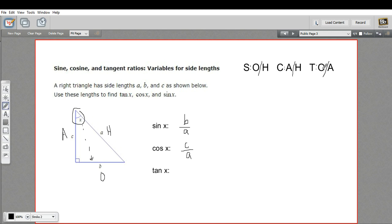Finally, the tangent is opposite over adjacent. The opposite is b and the adjacent is c, so tangent x equals b over c.